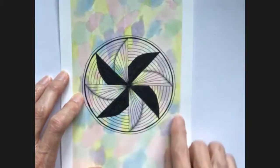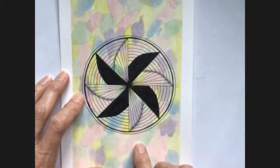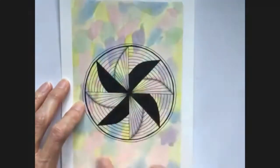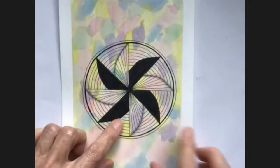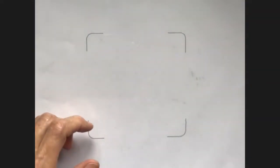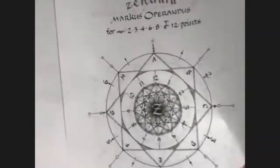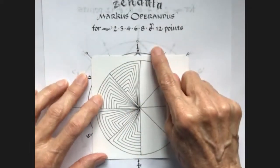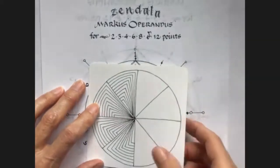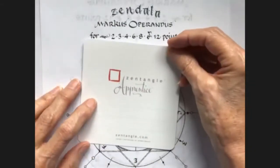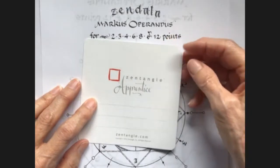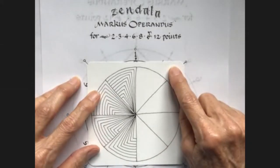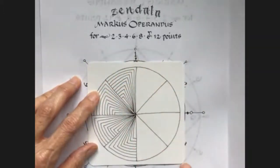I did just a plain watercolor background on this piece of paper. This is the pattern that I'm going to show you today. I marked these lines using the Marcus Operandus. This is an apprentice tile because I wanted it to be a little bit bigger.